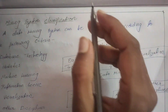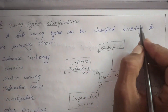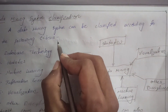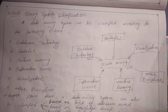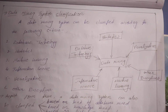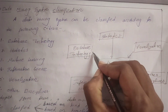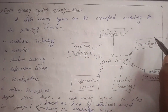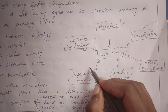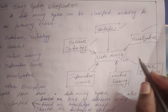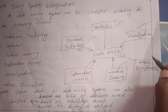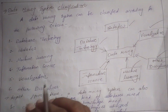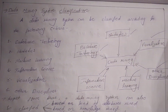Data mining systems can be classified according to the following criteria: database technology, statistics, visualization, information science, machine learning, and other disciplines. These are the general classifications of data mining systems.